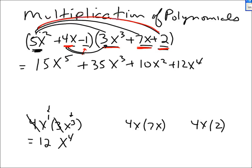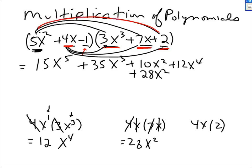Positive 4x times positive 7x: 4 times 7 is 28, and x times x is x squared, so I get plus 28x squared. I'll put it underneath the other x squared terms so I can easily combine them. Now 4x times 2: 4 times 2 is 8, times x, gives 8x. I'll write 8x over there.